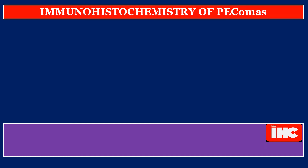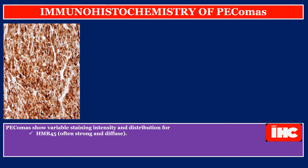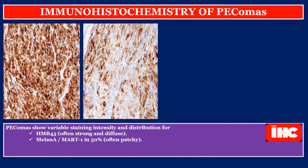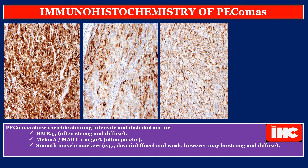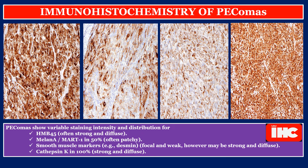Immunohistochemistry of PEComas. PEComas show variable staining intensity and distribution for: HMB-45, often strong and diffuse; Melan-A, marked in 50%, often patchy; smooth muscle markers such as desmin, focal and weak, however may be strong and diffuse; and cathepsin K in 100%, strong and diffuse.